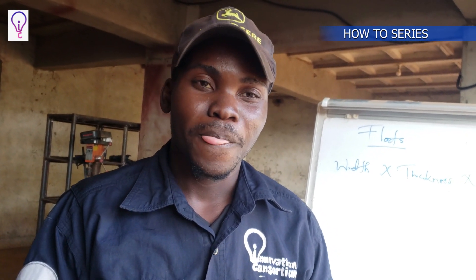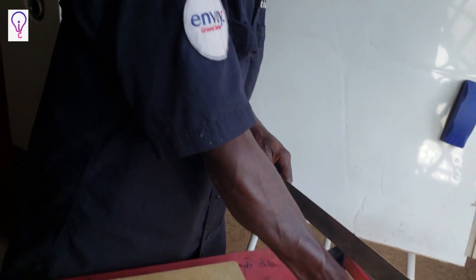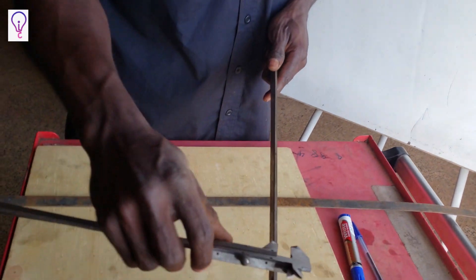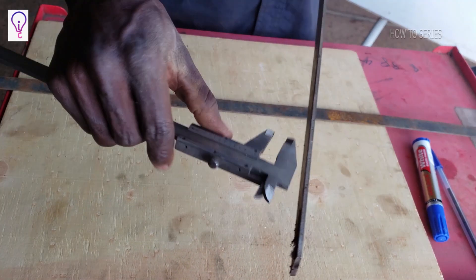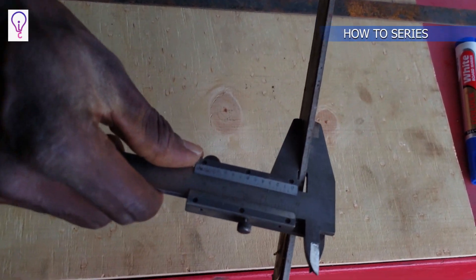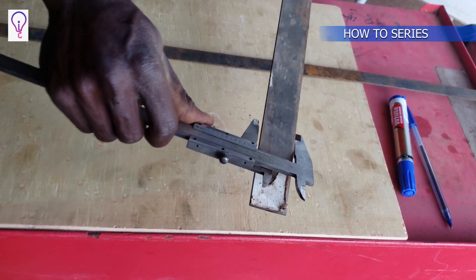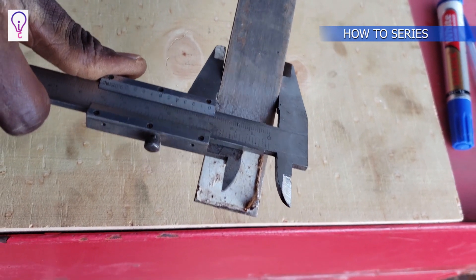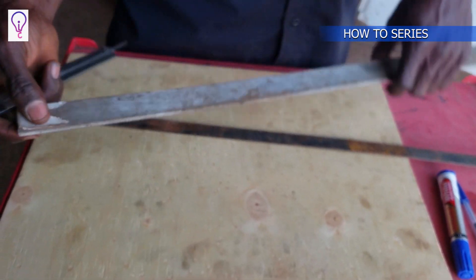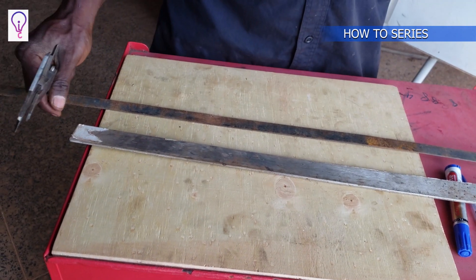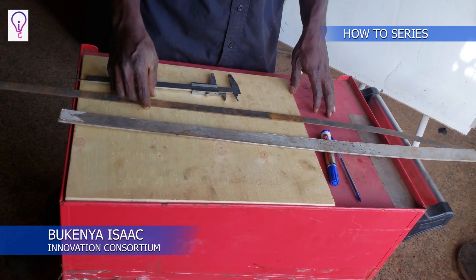To specify flats, the specification comes with the dimensions — the width, the thickness, the overall length, and the material. First, the thickness: we measure the smaller face of the cross-section. This one is 3.5 millimeters. Then the width, which is 30.5 millimeters. Then the overall length, which is 5.8 or 6 meters — that's the standard overall length of flats.